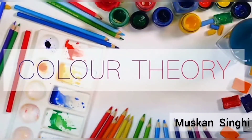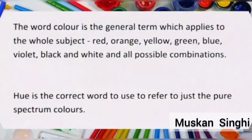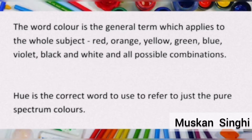Hello everyone. So let's begin color theory. The word color is a general term which applies to the whole subject — red, orange, yellow, green, blue, violet, black and white, and all possible combinations.